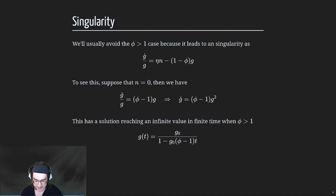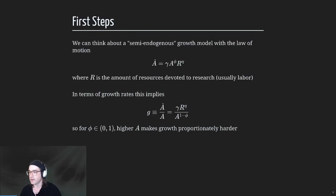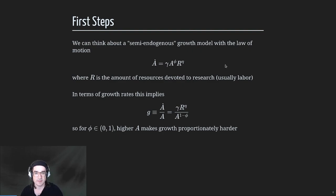So we got the singularity result - really more of a curiosity. The foundation here is this production function for ideas. You have a certain number of ideas or technology, you put in researchers, you have these parameters, and that spits out new ideas. And then we're just thinking about the implications of that relatively simple assumption.